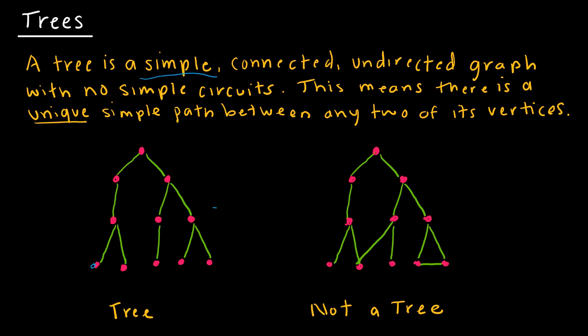So say this vertex down here and this vertex down here — the only way I can get from one to the other is along this one path. That's the only way I could do it.